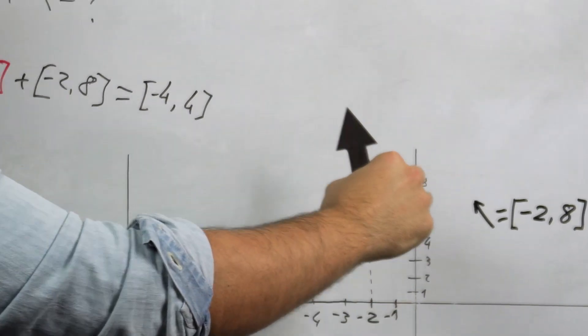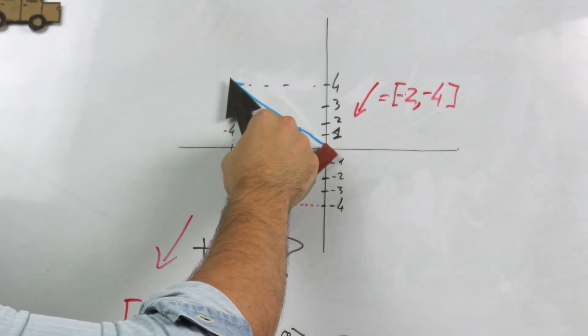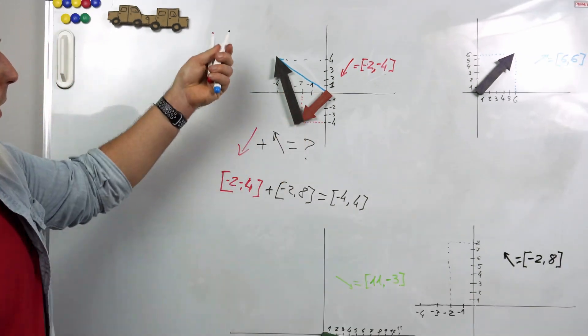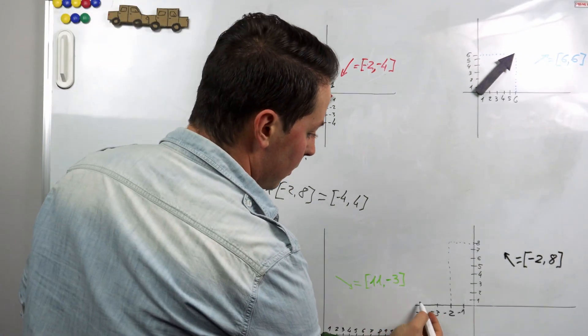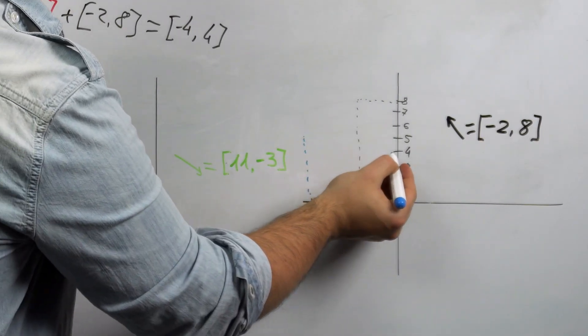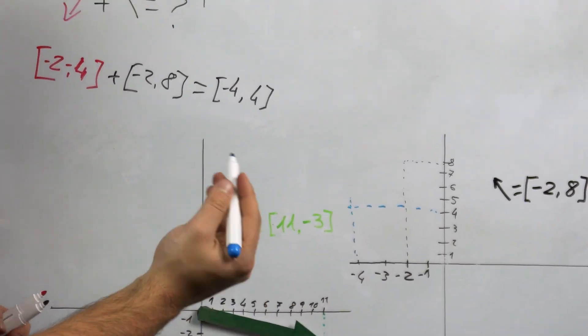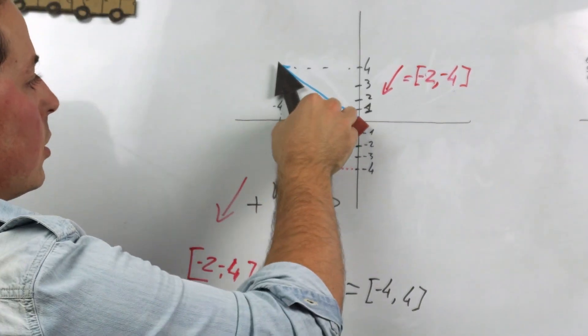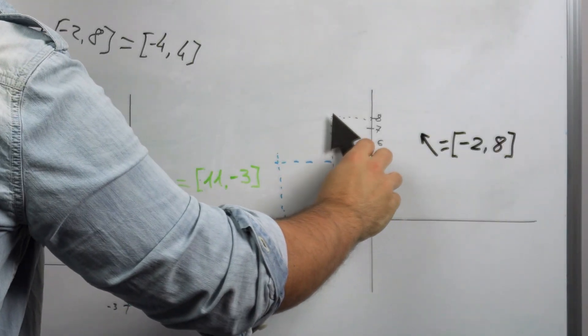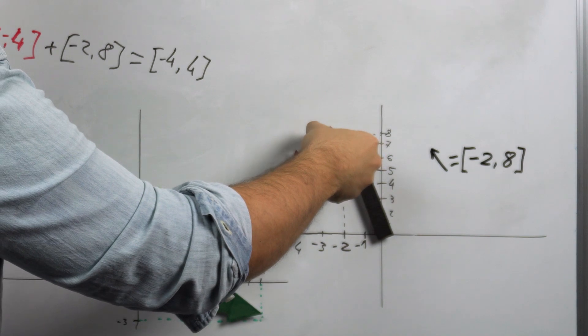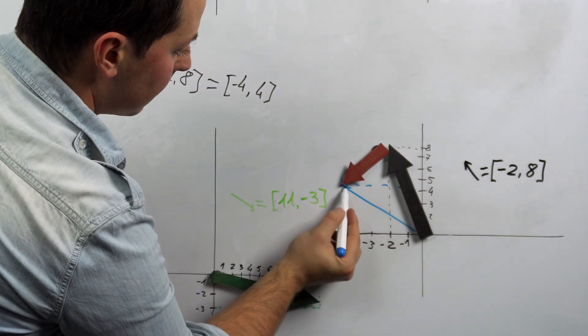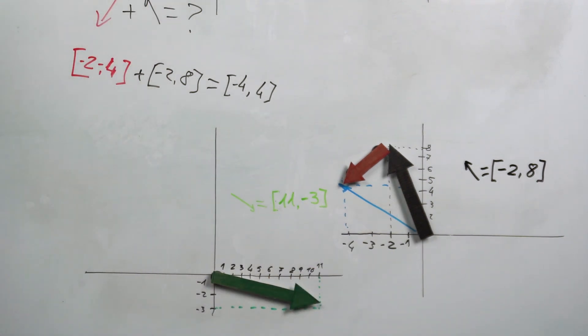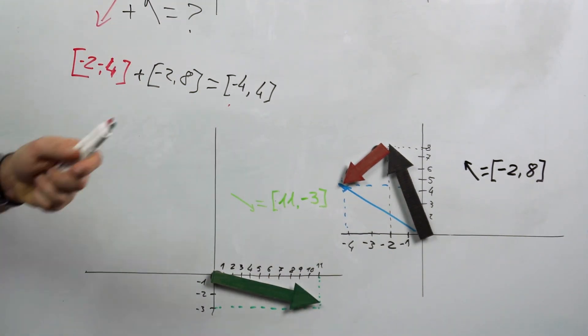And sure enough, if we take the black vector and we make sure not to change the direction, the result is exactly the same. Notice how here I can do the same thing in the opposite direction. So if I take my black vector and I add my red vector, the result is again the same (-4, 4) vector as we calculated here.